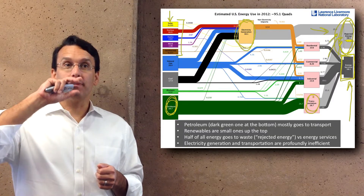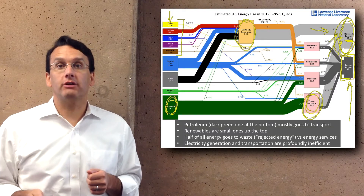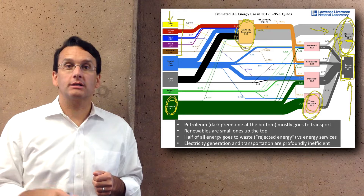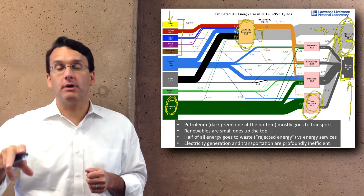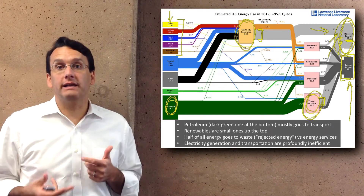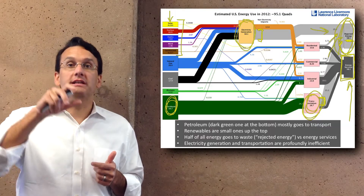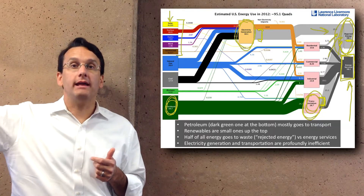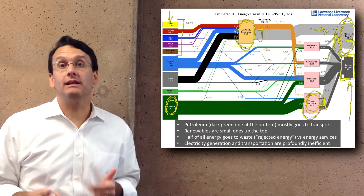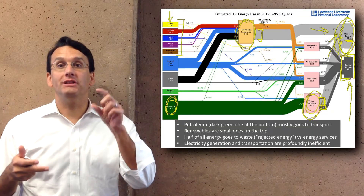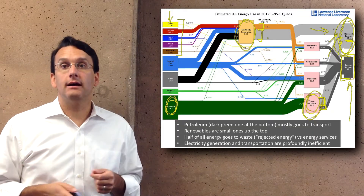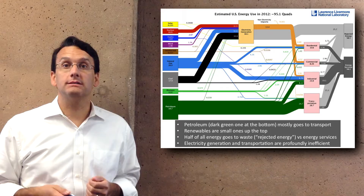I found it really striking that about half of all the energy we use goes to waste, either as excess heat or other forms of waste. In particular, electricity generation and transportation are profoundly inefficient. You can see the light gray coming out of each one of those, and it's significantly bigger than the energy actually being utilized by people from those processes.